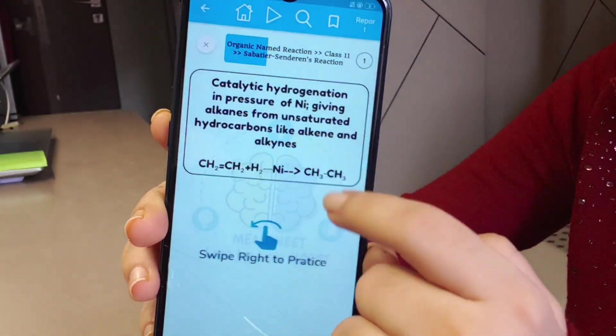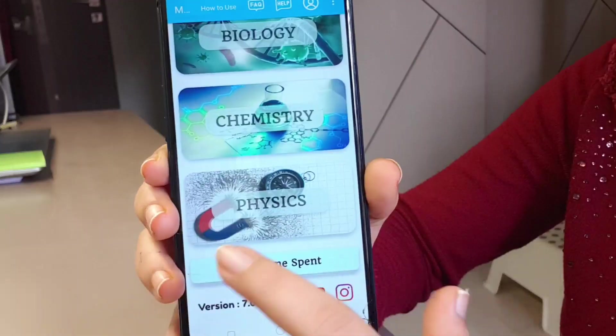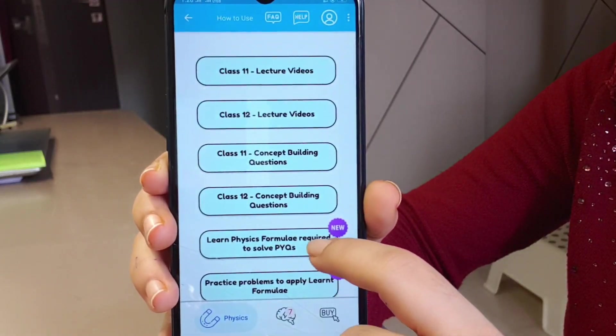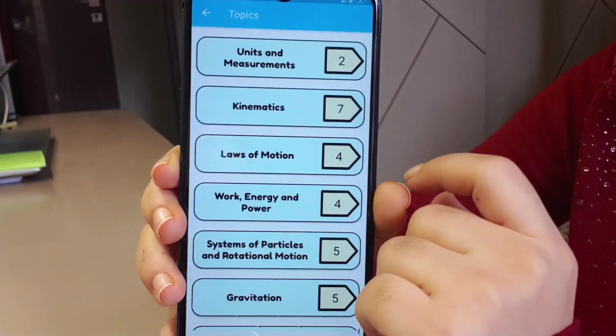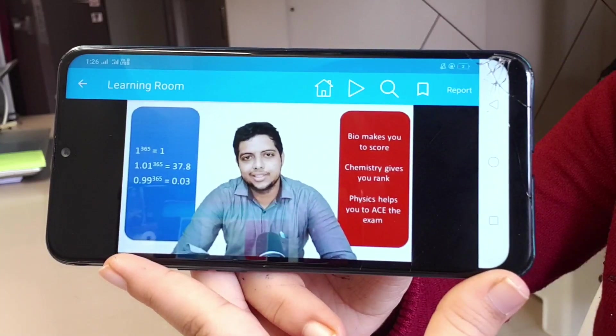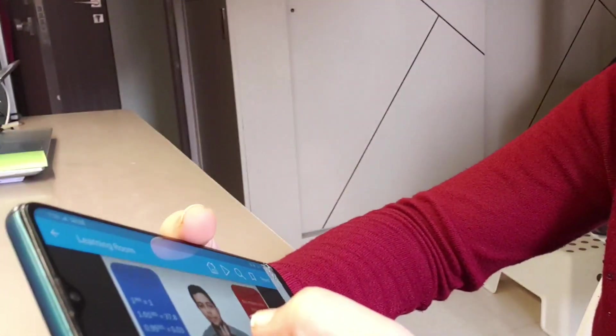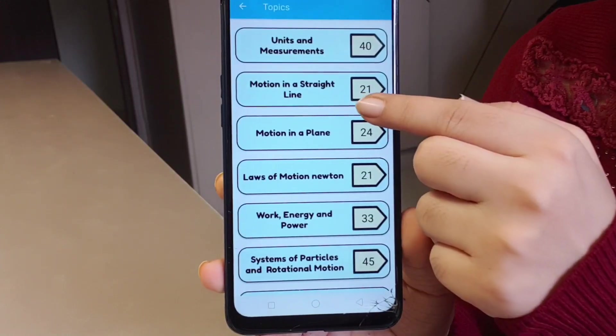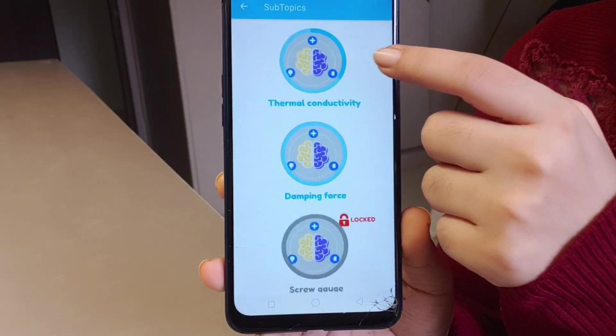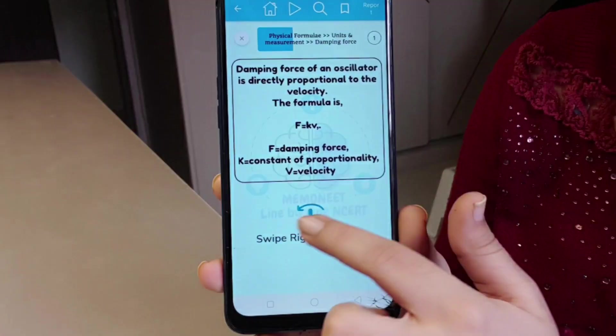Memonit's physics section has video lectures on all important topics, and you can find 30+ years of PYQs. For each PYQ, two similar questions were framed to help you recognize and recall the method. Physics has an additional section especially made for formulas.